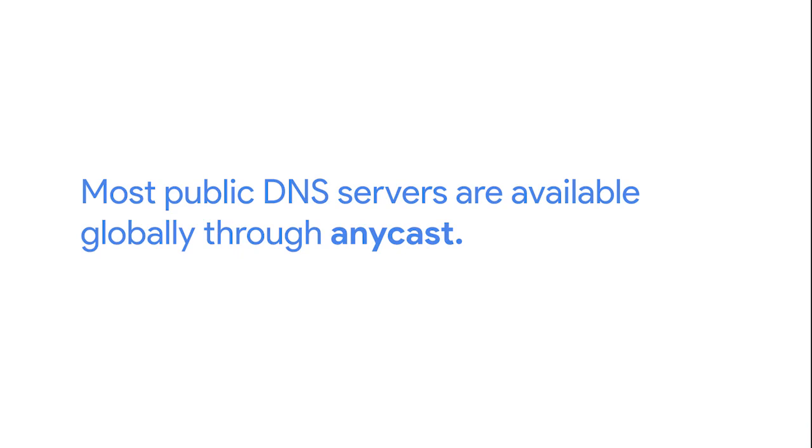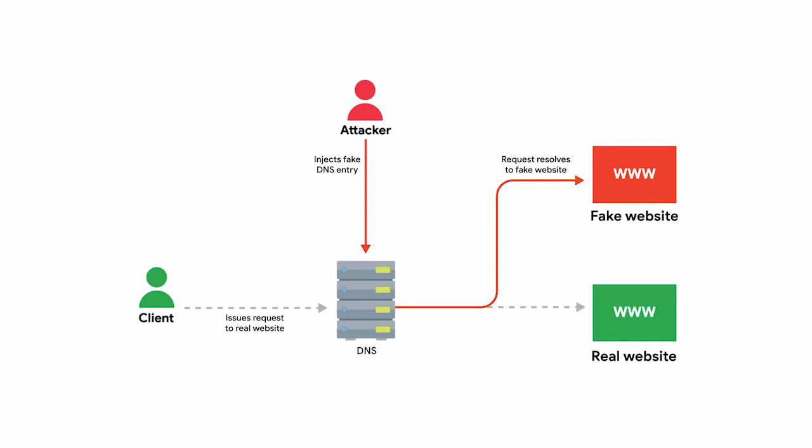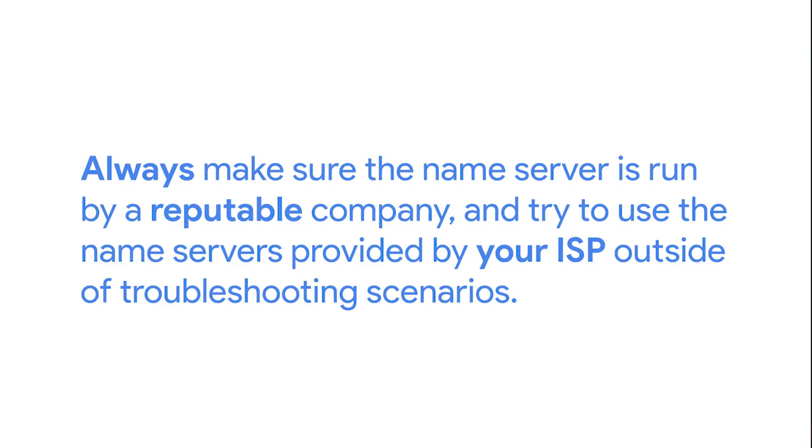Other easy-to-remember options are the IPs for Google's public DNS. Google operates public name servers on the IPs 8.8.8.8 and 8.8.4.4. Unlike the Level 3 IPs, these are officially acknowledged and documented by Google to be used for free by anyone. Most public DNS servers are available globally through Anycast. Always do your research before configuring any of your devices to use that type of name server — hijacking outbound DNS requests with faulty responses is an easy way to redirect your users to malicious sites. Always make sure the name server is run by a reputable company.